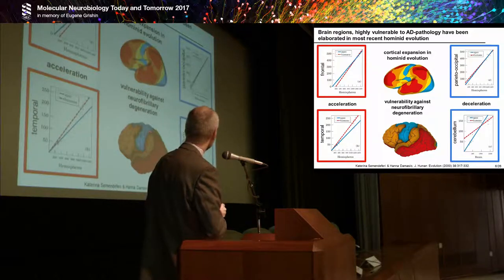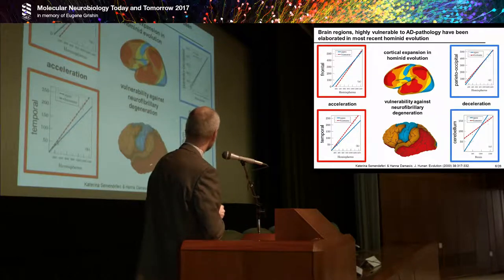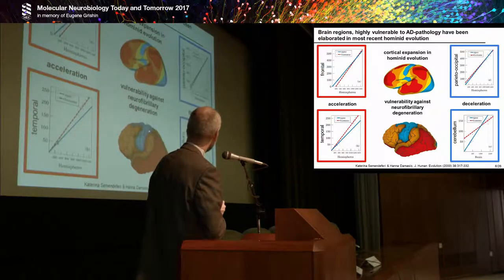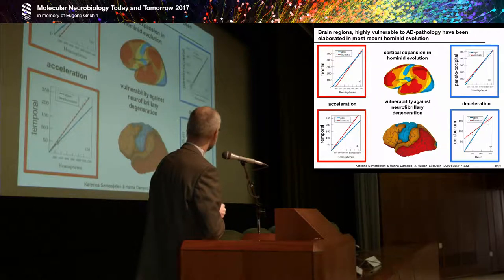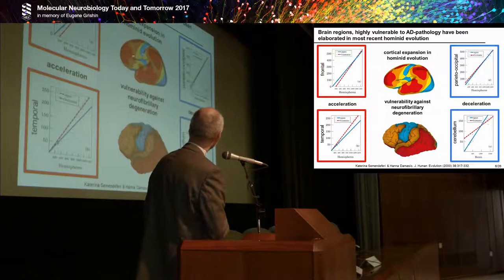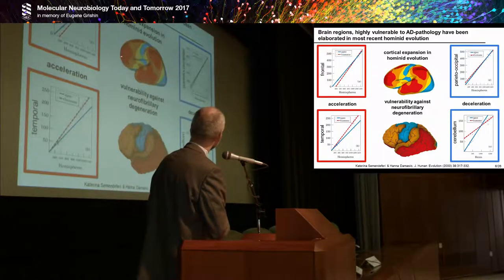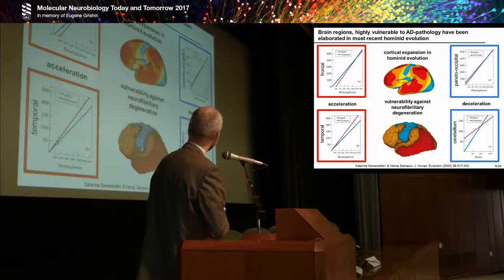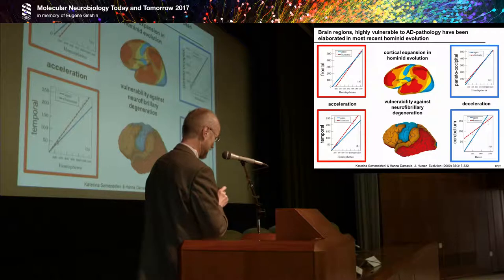This is shown in a heat map of vulnerability against neurofibrillary degeneration. Brain areas such as the temporal cortex and frontal cortex are affected most severely and earliest, while other areas shown in blue — such as the motor cortex and parieto-occipital cortex — show degeneration only at the most advanced stages. A second heat map shows cortical expansion in hominid evolution comparing monkey to human brain: the temporal and frontal cortex have increased in volume most dramatically, while motor and occipital cortex have decelerated. This matches the pattern of neurofibrillary degeneration in the disease.